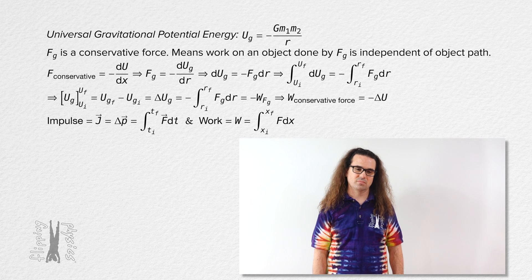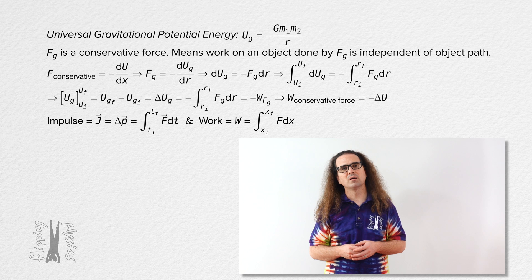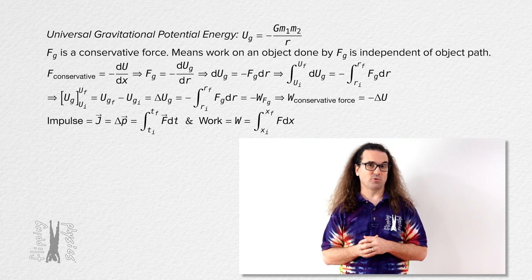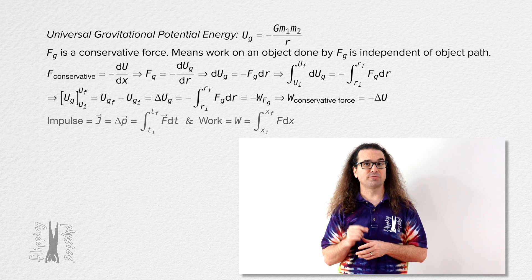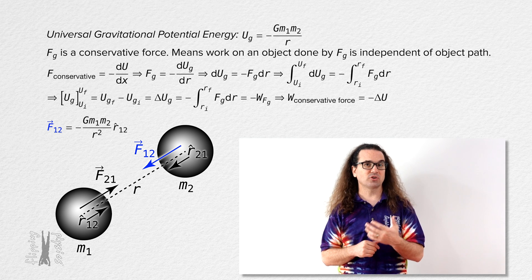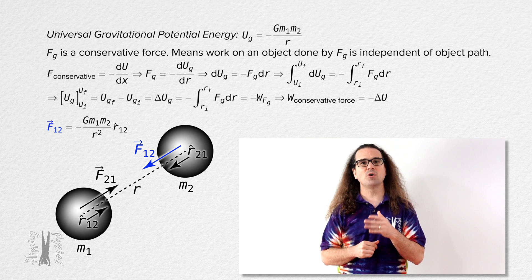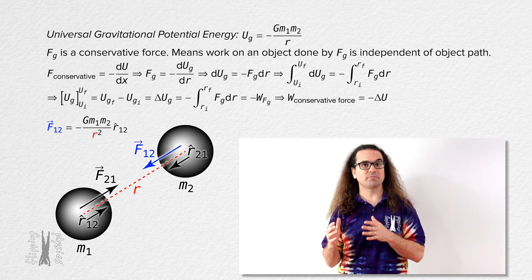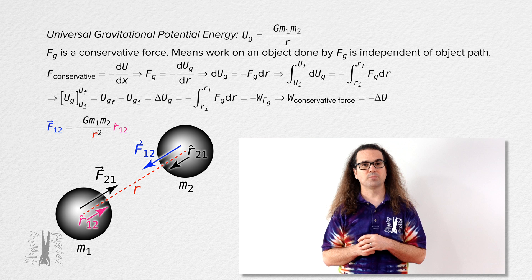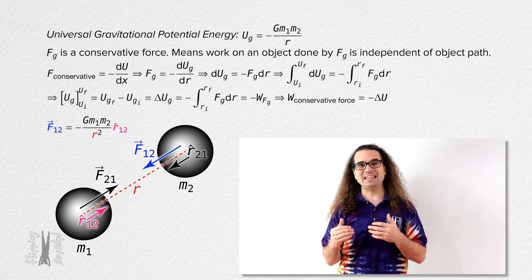We just showed that the work done by a conservative force equals the negative of the change in potential energy associated with that force. Now, because the force of gravity is an attractive force, the vector version of the universal gravitational force equation is that the vector of the force of gravity from object 1 on object 2 equals the negative of the quantity: universal gravitational constant times mass 1 times mass 2, all divided by the square of the distance between the centers of mass of the two masses, all times unit vector r from object 1 to object 2.